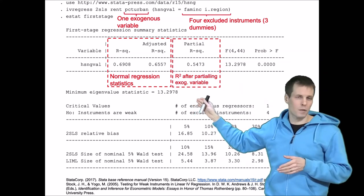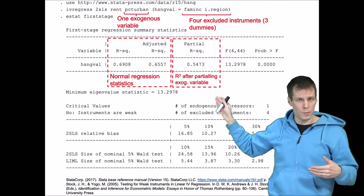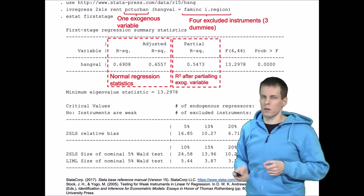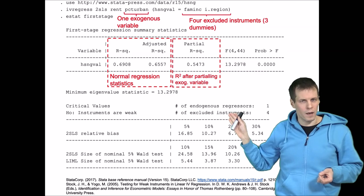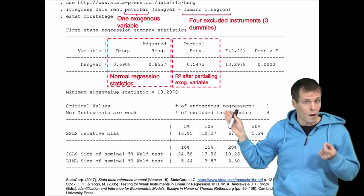So it tells us how much these instruments explain the endogenous explanatory variable uniquely when we control for this exogenous variable. And that is the key quantity. This needs to be high enough so that we can conclude that the instruments are not weak.